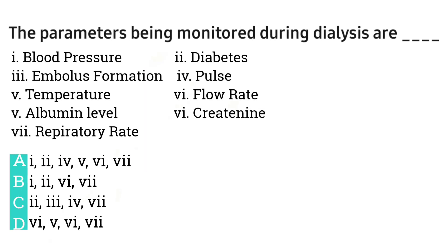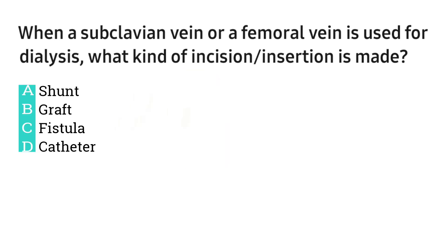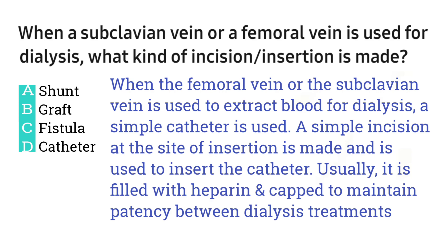Question number eight: the parameters being monitored during dialysis — the right option is A. Question number nine: how does the doctor diagnose dialysis — option C is the right answer. Question number ten: when a subclavian vein or a femoral vein is used for dialysis, what kind of insertion is made — the right option is D.